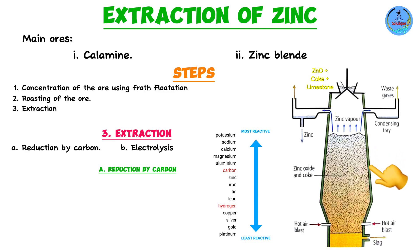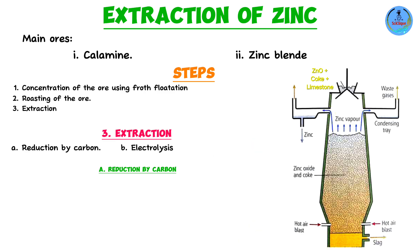A blast furnace is used for smelting of metals — that is, extraction of metals from their ores through heating under very high temperatures. The zinc oxide is mixed with coke (essentially carbon) and limestone (calcium carbonate). Each of these three components plays a role: zinc oxide is what we're extracting zinc from, and we'll discuss the roles of coke and limestone as we proceed.